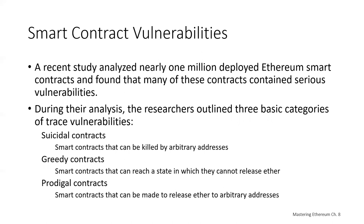The first category is suicidal contracts — smart contracts that can be killed by an arbitrary address, meaning anyone could come in and kill the smart contract. Second are greedy contracts, where a smart contract can reach a state in which it cannot release Ether — someone deposits Ether and then the contract can be manipulated so it can no longer release that Ether. Third are prodigal contracts, which can be made to release Ether to arbitrary addresses, meaning a hacker can come in and take all the Ether.